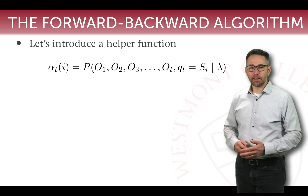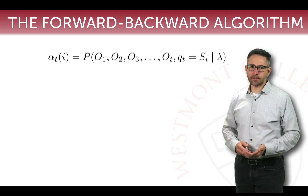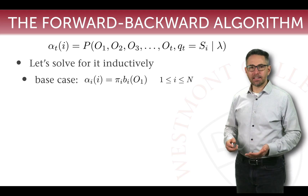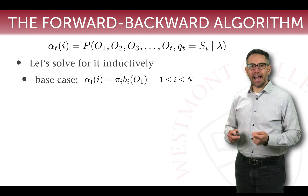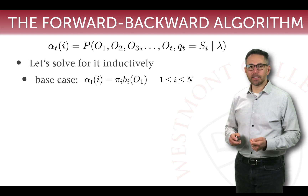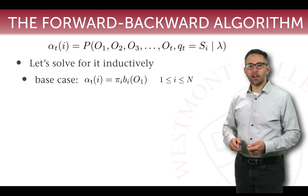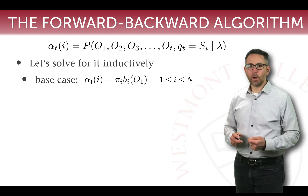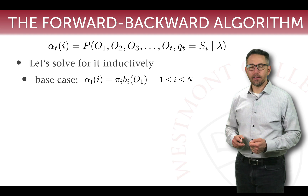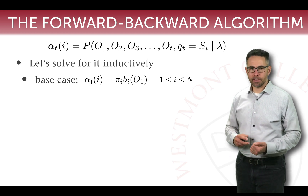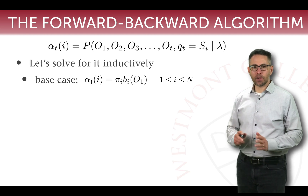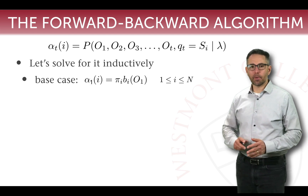We're going to calculate alpha inductively, so we need a starting base case. The base case is alpha sub one of i, which is calculated as pi(i) — the probability of starting in state i — times b(i, o1) — the probability of seeing observation number one given that we're in state i. This is a straightforward computation that only considers up until time one.